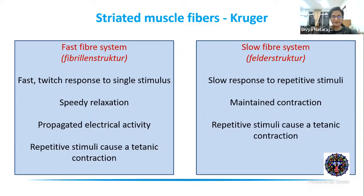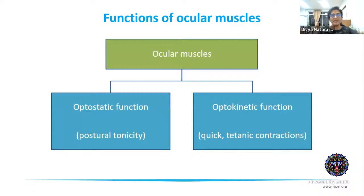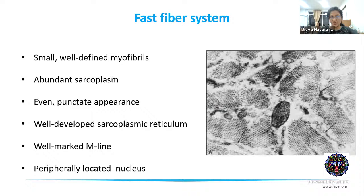If Kruger identified two different fiber systems, how can a single ocular muscle have both functions — optostatic (postural tonicity, slow-acting) and optokinetic (quick tetanic contraction)? The answer is that a single extraocular muscle contains distribution of both the fast fiber system and the slow fiber system within the same small myofibril. Let's look at what each system looks like histologically.